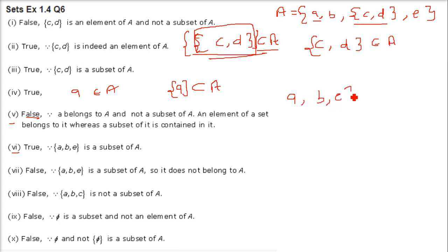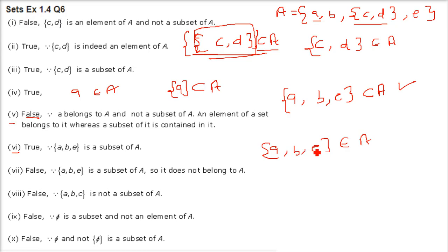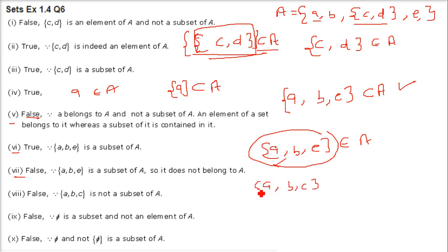Sixth: {a, b, e} ⊆ A — a is there, b is there, and e is there in A. So this is a subset. This is correct. Seventh: {a, b, e} ∈ A — false, because the set {a, b, e} is not listed as an element inside A. Eighth: {a, b, c} ⊆ A — false, because {a, b, c} as a complete set is not a subset of A in this arrangement.